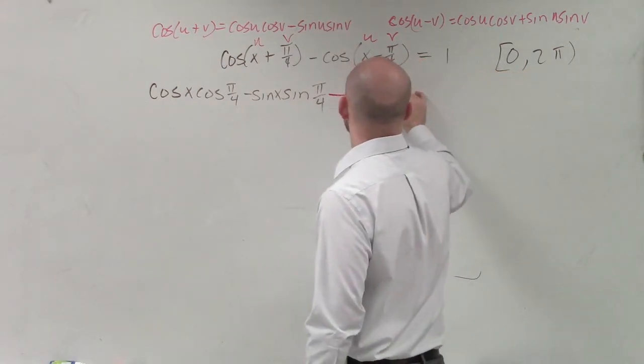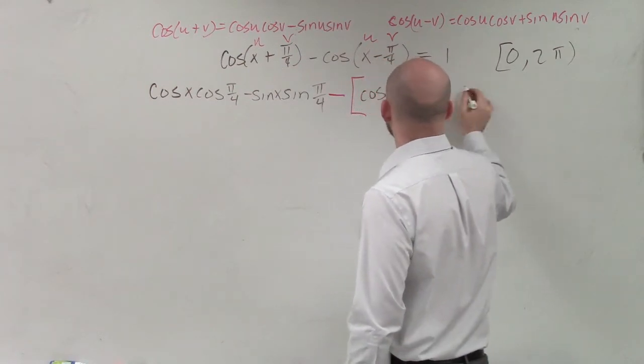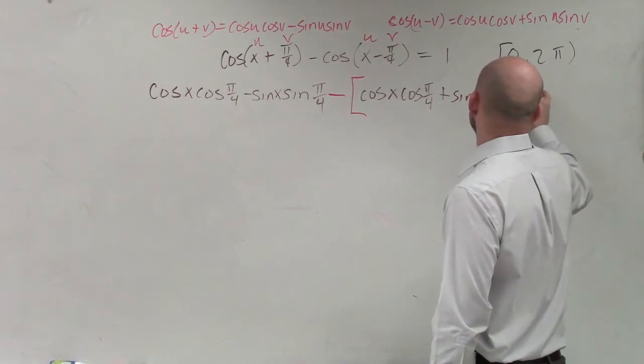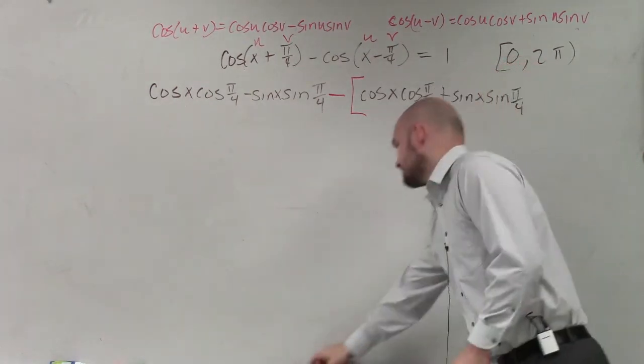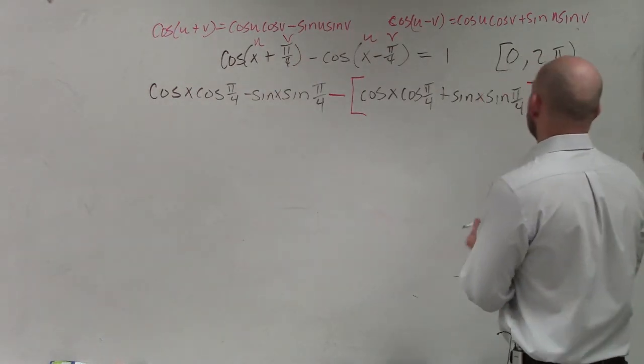this is the cosine of x times the cosine of pi over 4 plus the sine of x times the sine of pi over 4. And that all equals 1.